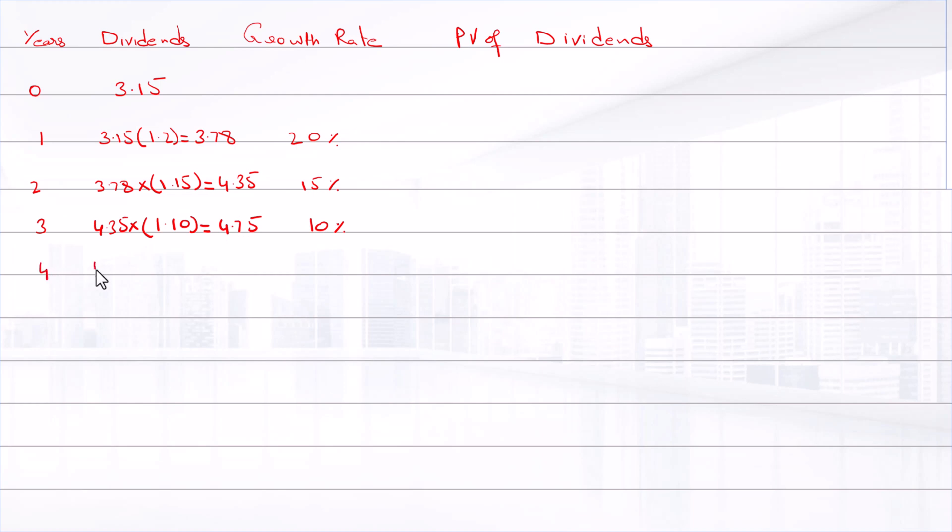In fourth year, 4.78 into, and the growth rate is 5%, so 4.78 times 1.05, that is $5.021. And if we calculate the present value of this dividend.